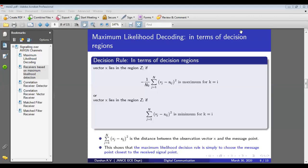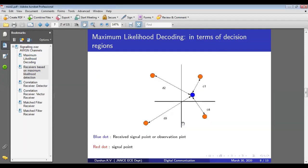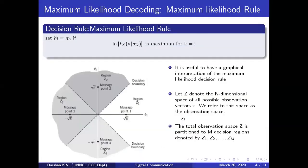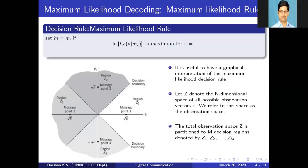Good afternoon. Let me continue from where I stopped in Saturday's class. This is the point where we started Saturday's class and let us revise the concept of Saturday's class, then we will move on. The entire topic is the decision rule — how exactly the receiver decides which message has been transmitted.